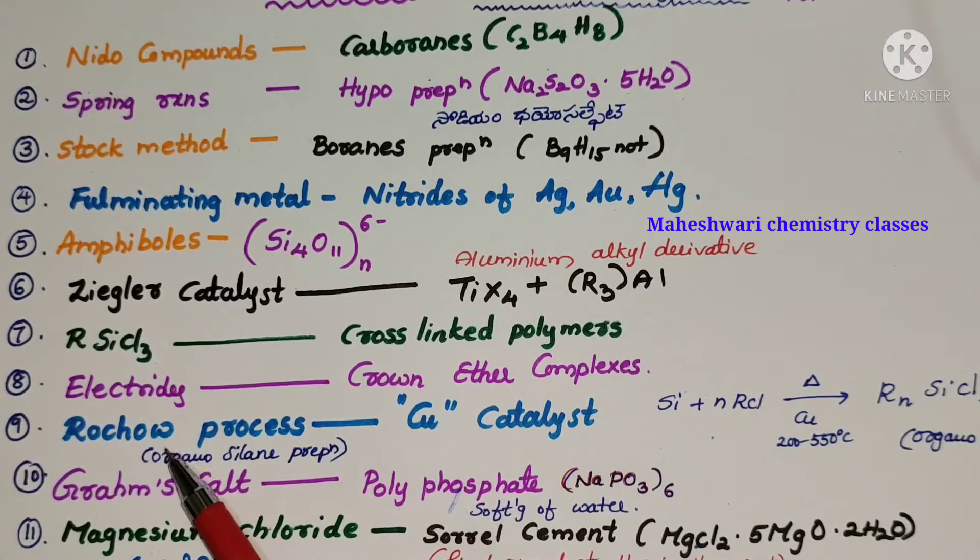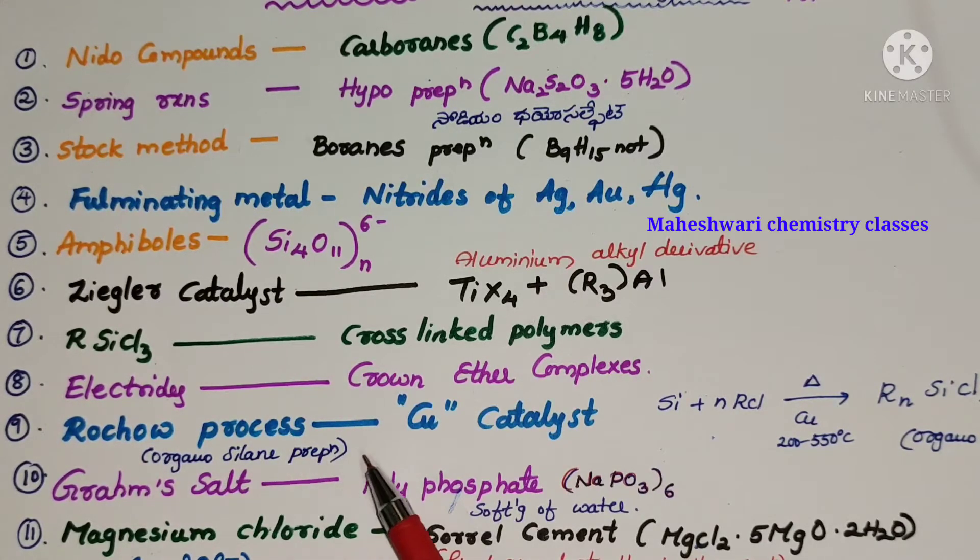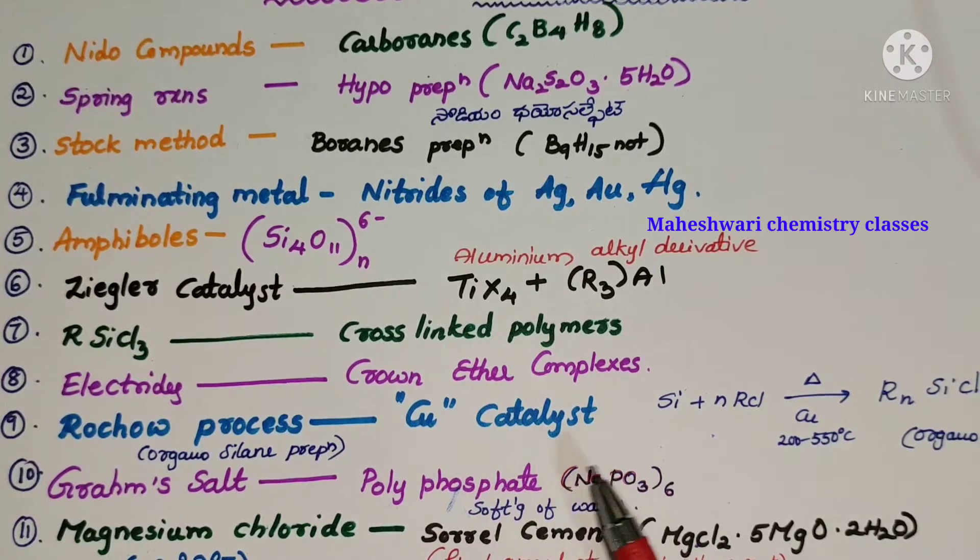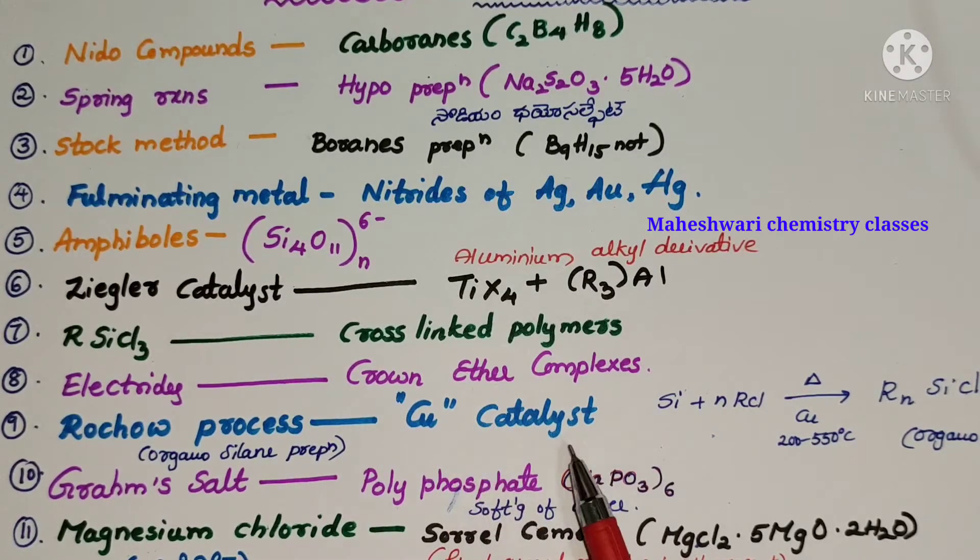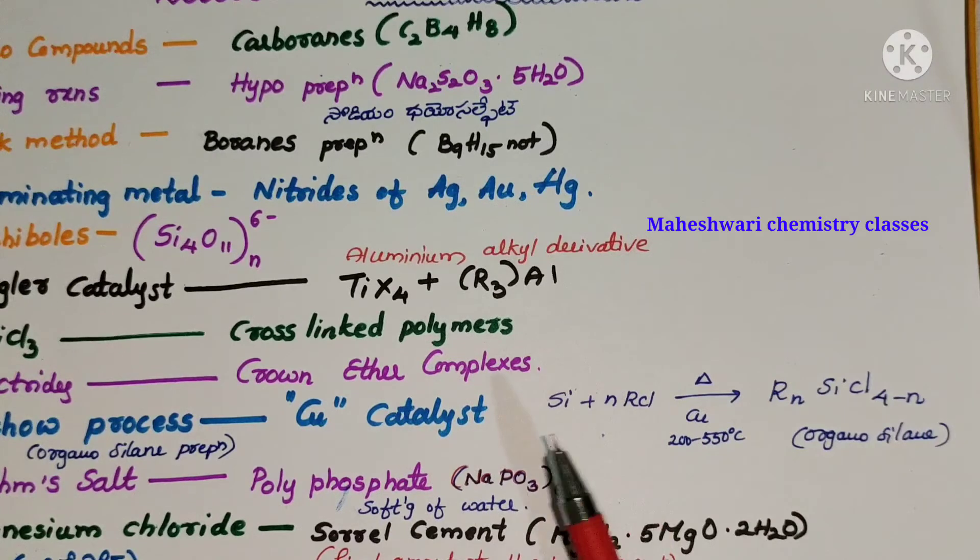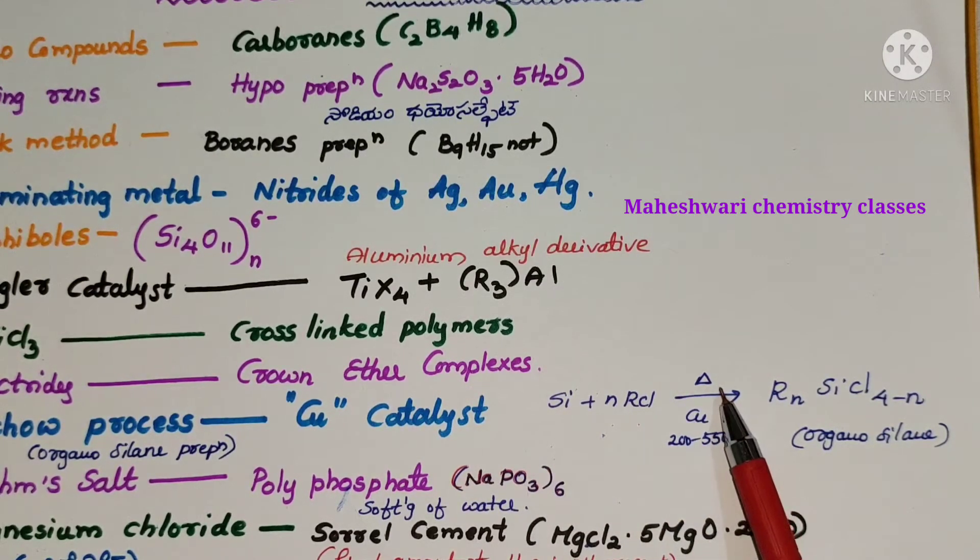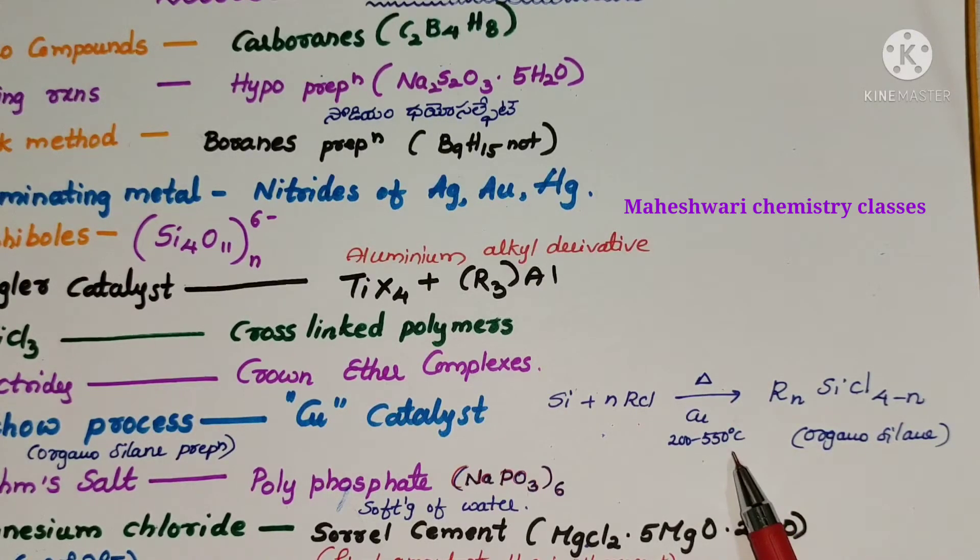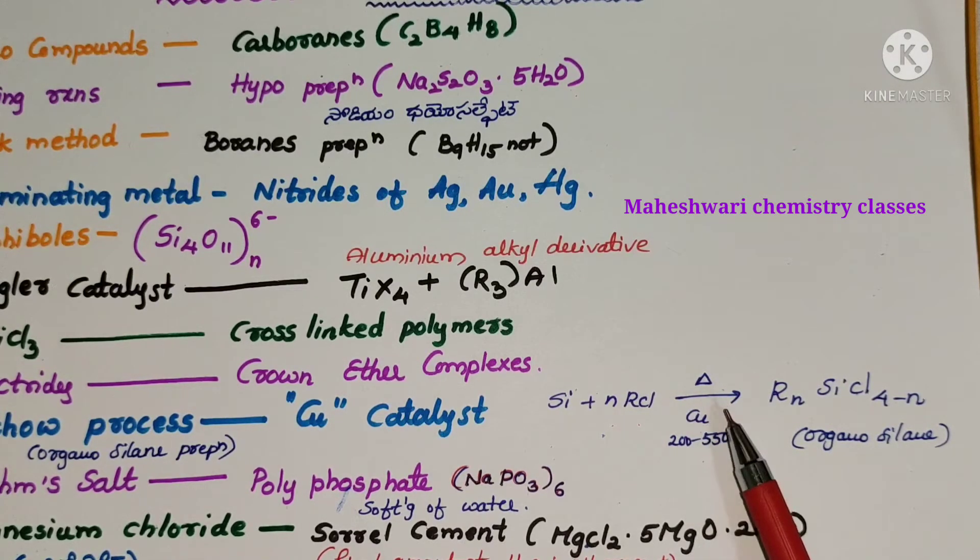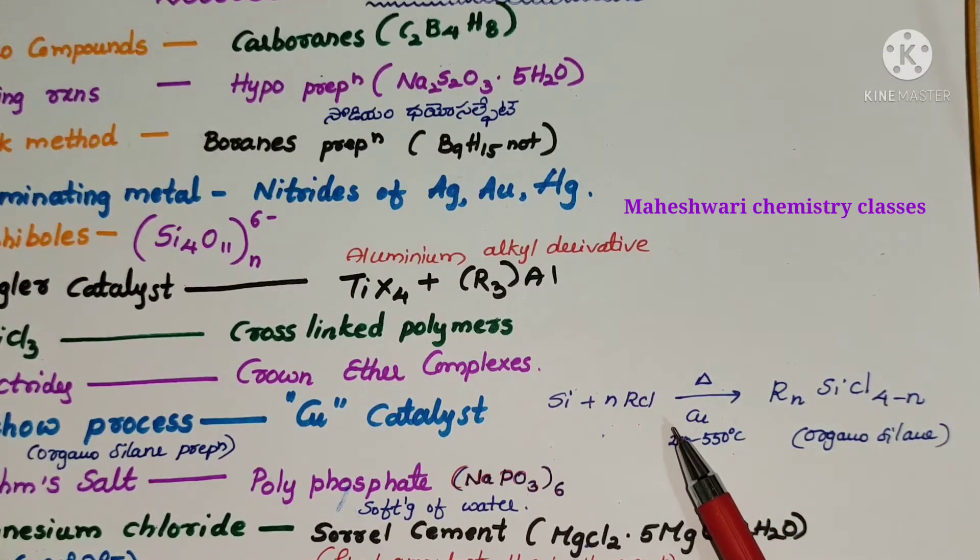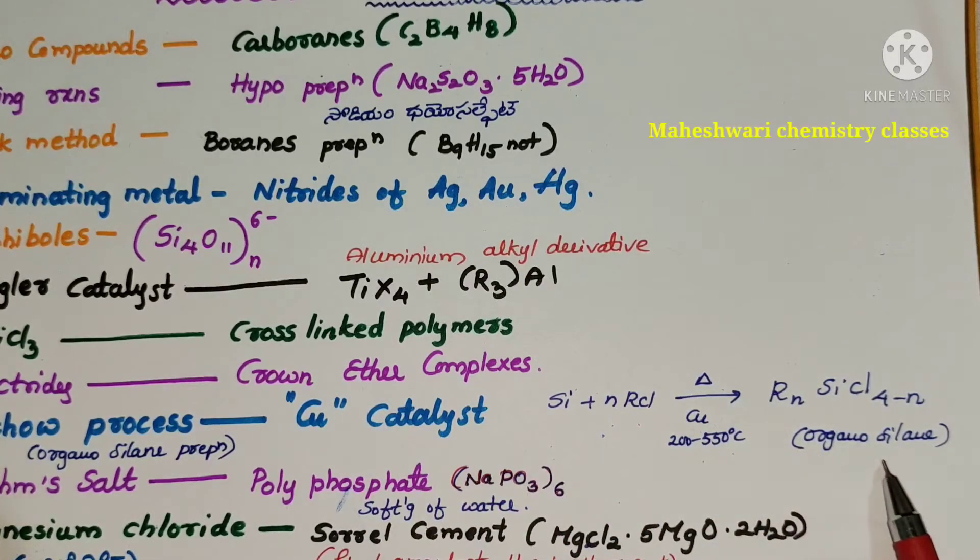Rochow process. Actually it is an organosilane preparation process. In the actual process we are using copper catalyst. Silicon reacts with alkyl chloride in presence of high amount of temperature, 200 to 550 degree Celsius. Here we are utilizing copper catalyst. Catalyst cannot involve in the reaction, but it may increase the reaction. That is copper. It may form organosilane.